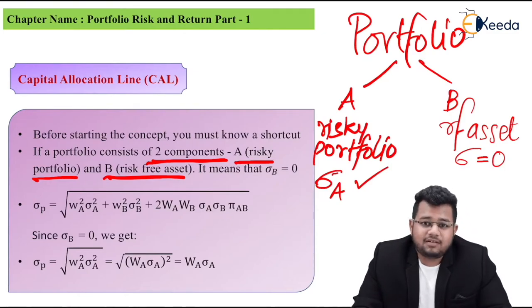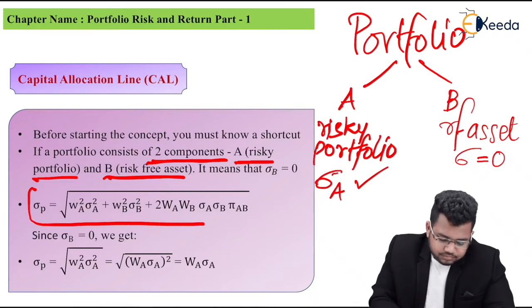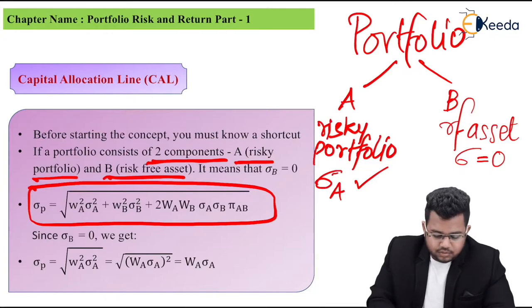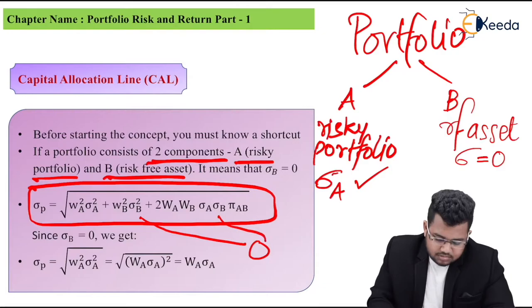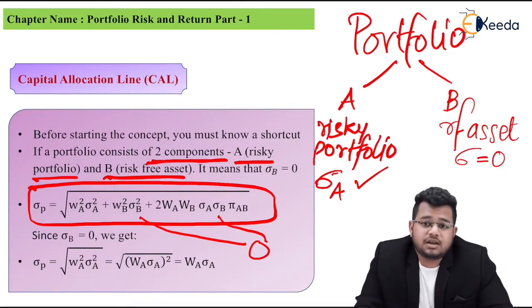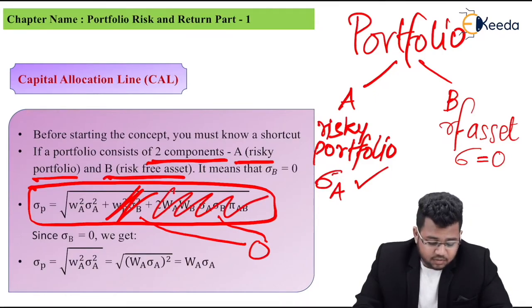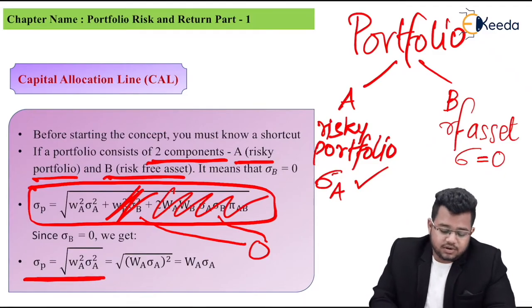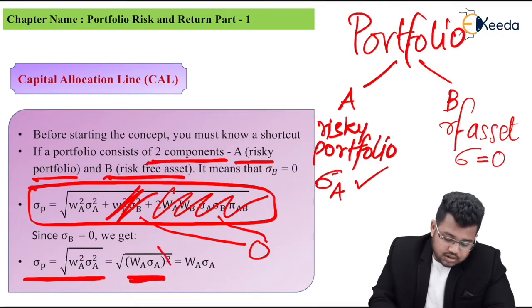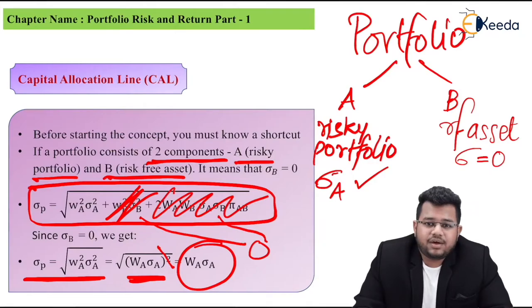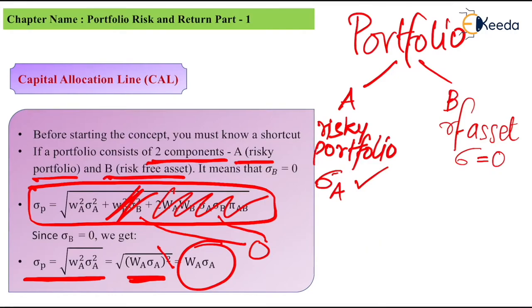If you know this formula, you've already seen two shortcuts. Now this is the third shortcut. In the standard deviation of portfolio formula, sigma B is zero, and this sigma B becomes zero because B is risk free asset, it can be US treasury bills. Now if both become zero, I can say this term is zero and this term is also zero. I am left with only one term which is WA square sigma A square. In other words, I can say WA sigma A whole square, and then this root and square cancel out. So what remains is WA sigma A. To conclude, the shortcut is: if A is risky and B is risk free, then B's sigma is zero, so my standard deviation formula becomes very small, which is WA sigma A, simple. So this is the third shortcut you need to remember.